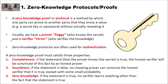As already mentioned, zero-knowledge protocols are often used for authentication. A zero-knowledge proof must satisfy three properties. The first one is completeness: if the statement that the prover knows the secret is true, the honest verifier will be convinced of this fact by an honest prover.